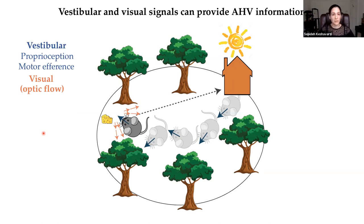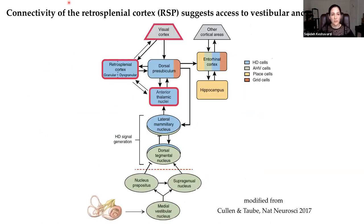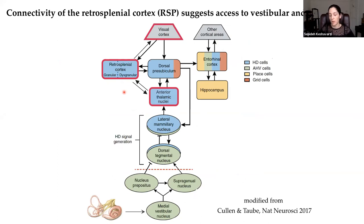We address this in the retrosplenial cortex of the mouse. I want to draw your attention to this diagram of the head direction network and where RSC is located, to point out that it has a connection with the ascending vestibular head direction pathway and also visual cortex that could provide vestibular and visual information. There are also many studies pointing to RSC being important for self-motion-based navigation and also spatial orientation, both in animal models and in humans.